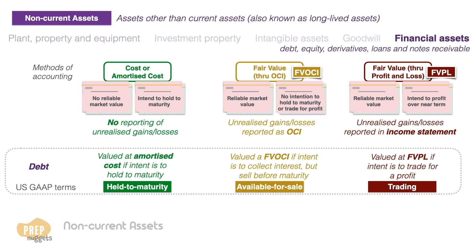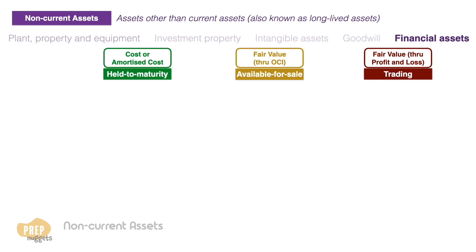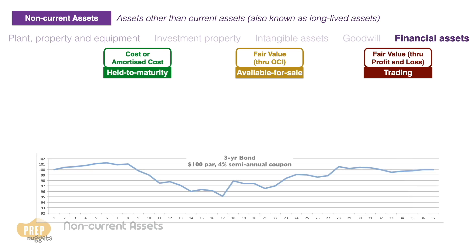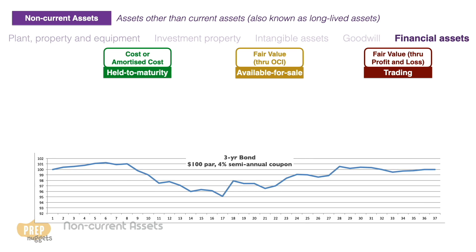To illustrate the accounting of these three categories and the general accounting principles for the corresponding methods, we shall use an example of a three-year $100 PAR 4% semi-annual fixed coupon bond. The bond was purchased at $100 PAR, received a $2 coupon after six months, and the market price at reporting is $97.50.